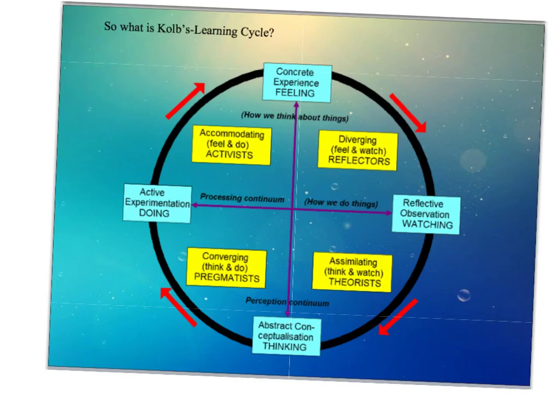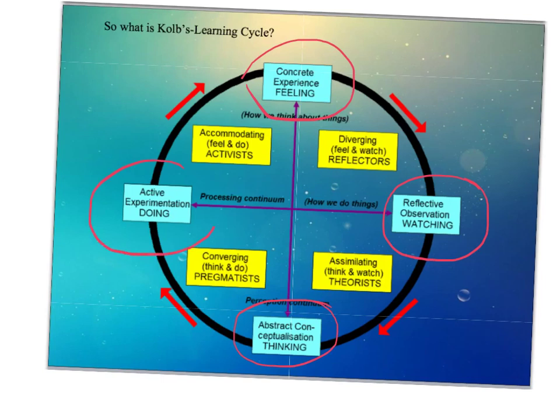We have concrete experience, then we have the reflector, then we have the abstract, and then we have the active. These are all four key parts of Kolb's Learning Cycle.